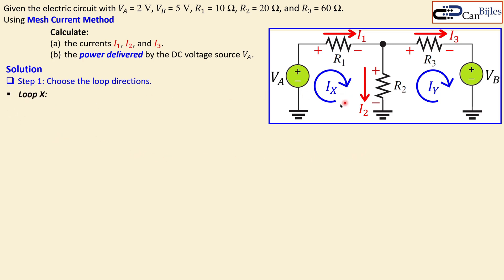For loop X, going clockwise from the ground reference, I first encounter the minus then the plus of voltage source VA, giving minus VA. Then I see R1 and R2 with a positive sign because they are in the same direction as IX. However, IY is flowing through R2 in the opposite direction, so it fights back — that gives us minus R2 times IY. Collecting terms: R1 plus R2 times IX, minus R2 times IY.